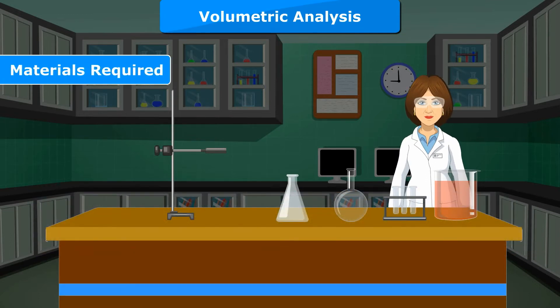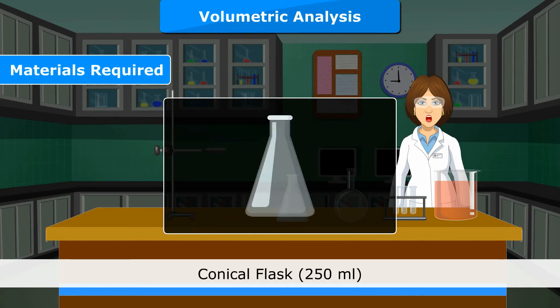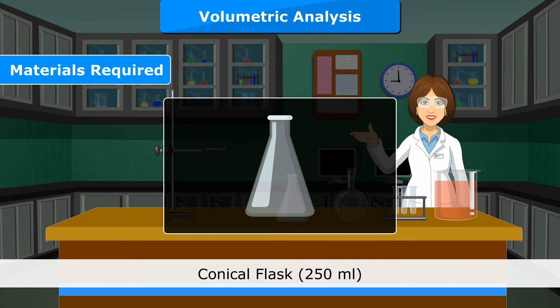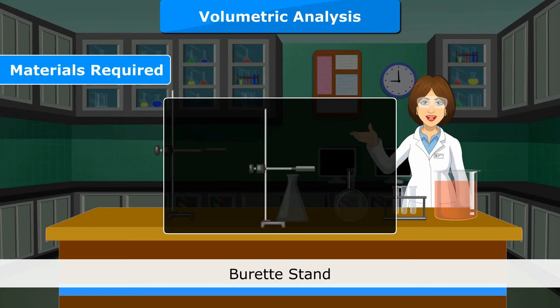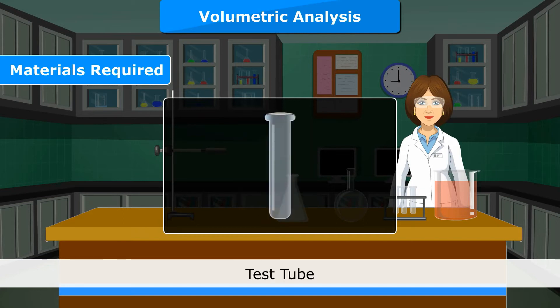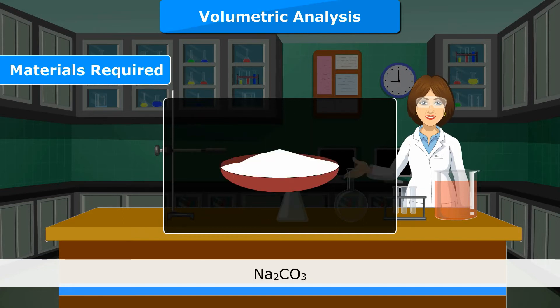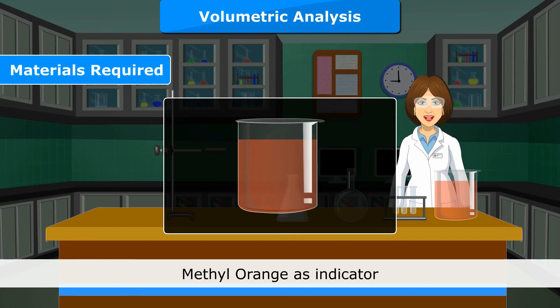Materials required: Burette 50 ml, Pipette 10 ml, Conical flask 250 ml, Volumetric flask 100 ml, Burette stand, Funnel, Beaker 100 ml, Test tube, Na2CO3, HCl acid, Methyl orange as indicator.